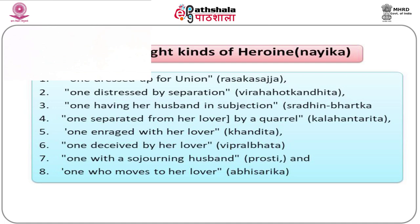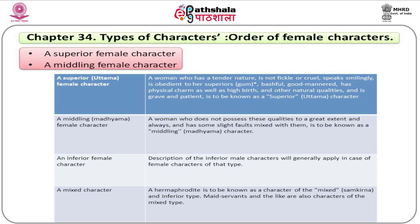Natya Shastra describes types of female characters. A superior (Uttam) female character has a tender nature, is not fickle or cruel, speaks smilingly, is obedient to her superiors, bashful, good-mannered, with physical charm and high birth, and is grave and patient. A middling (Madhyam) character does not possess these qualities to a great extent and has slight faults. An inferior female character mirrors inferior male characters. A mixed (Sankilna) character includes certain types; maid servants and the likes are also of mixed type.